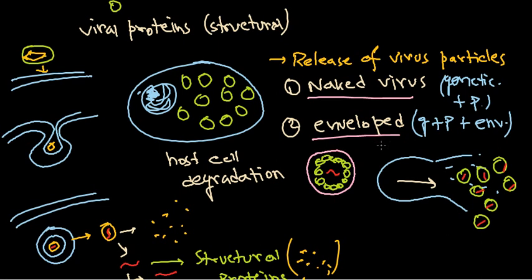Generally, all the virus particles generated inside the host cell are of the naked virus type. They have two important components: one is the genetic component surrounded by the protein or capsid part. The capsid protects them from the outer environment, and the genetic component is everything for these virus particles.